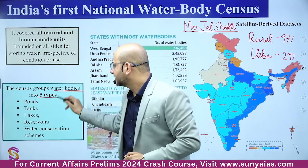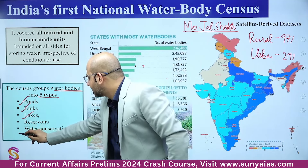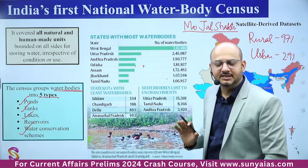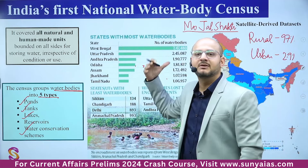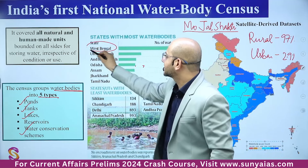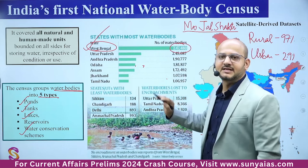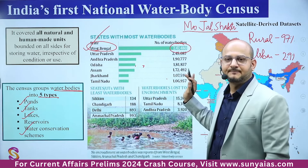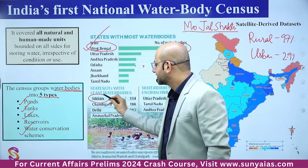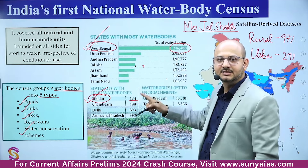The census classifies water bodies into five categories: ponds, tanks, lakes, reservoirs, and water conservation schemes. The state with the maximum number of water bodies is West Bengal with more than 7,47,000 water bodies. The state with the least number of water bodies is Sikkim with only 134 water bodies.